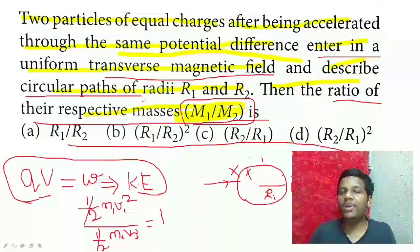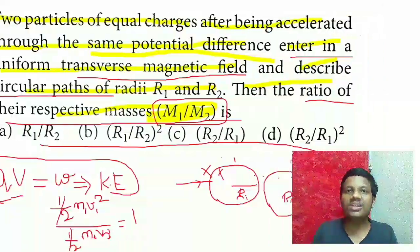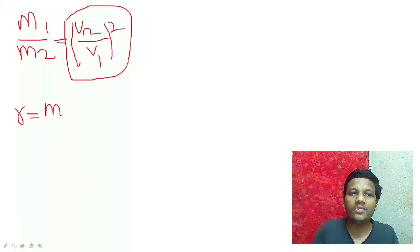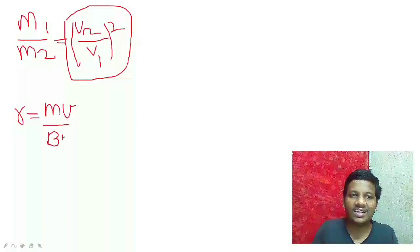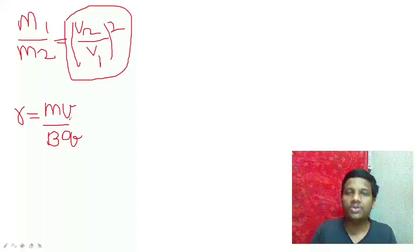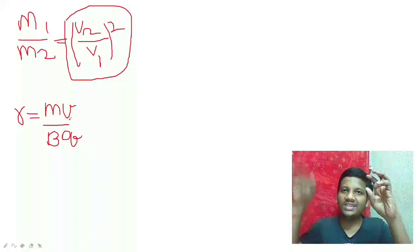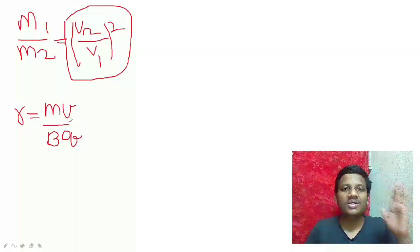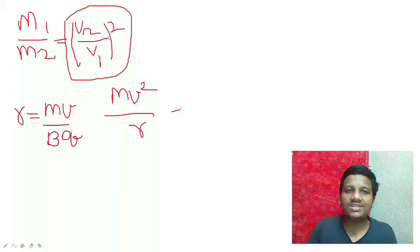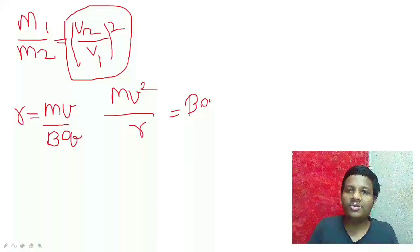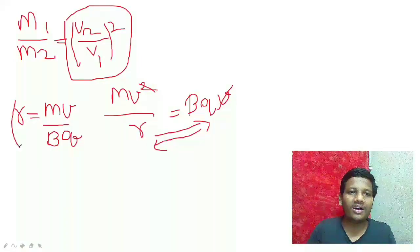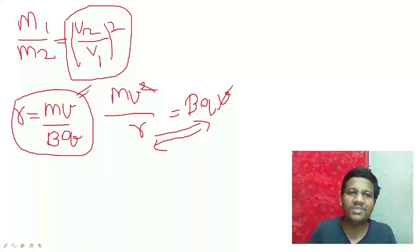What connects velocity and radius in a magnetic field circular path? Yes, you're correct - the principle that R equals MV by BQ. You know, centripetal force equals magnetic force BQV. Centripetal force is MV squared by R equals BQV. Canceling V, we get R equals MV by BQ. This is very important.